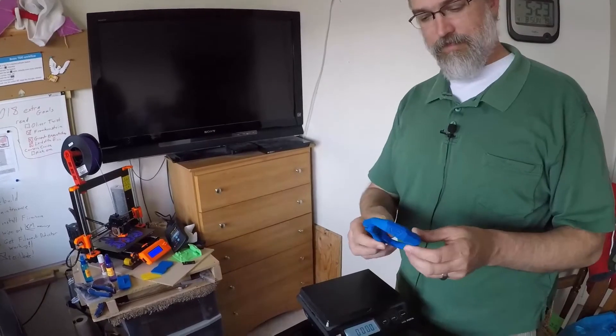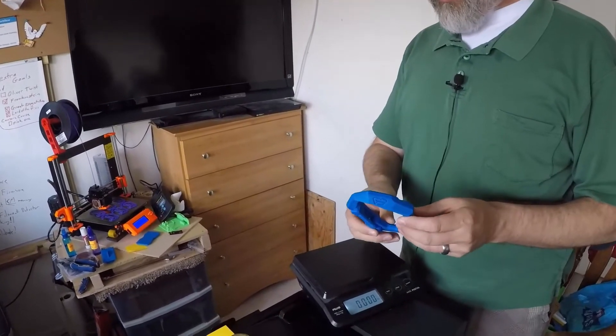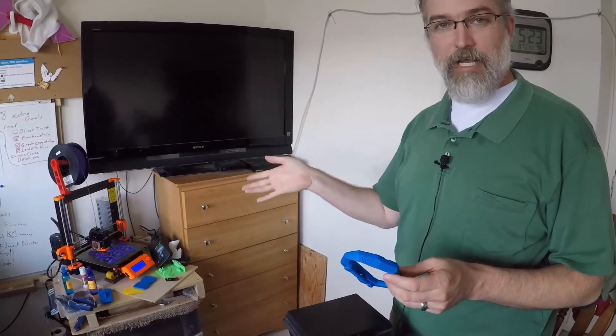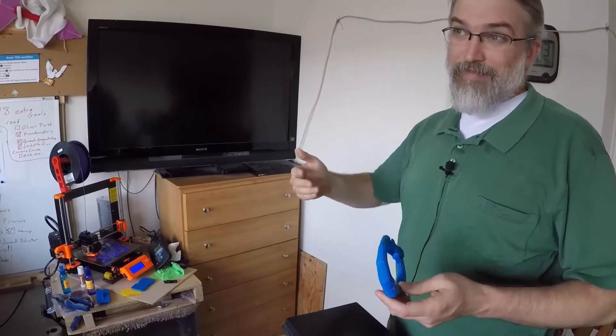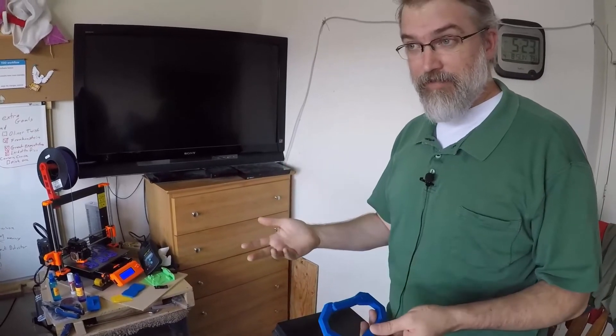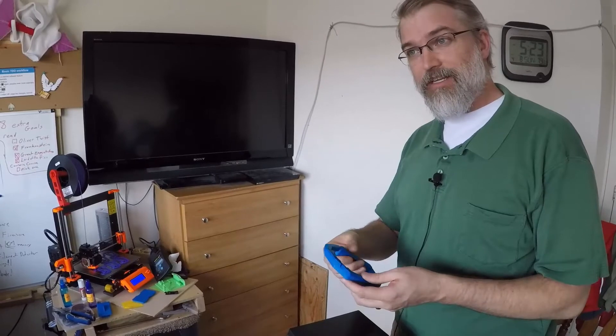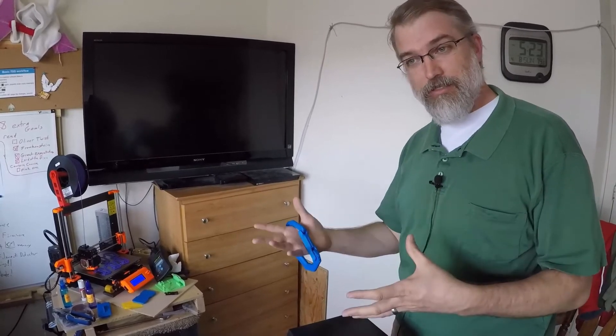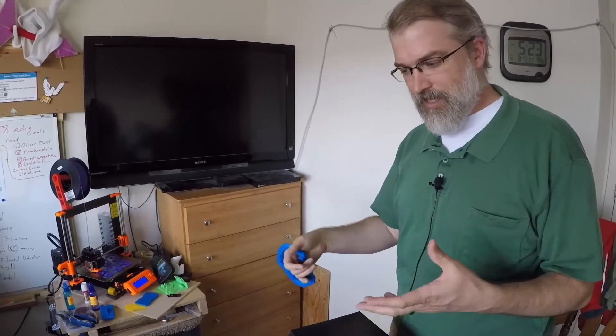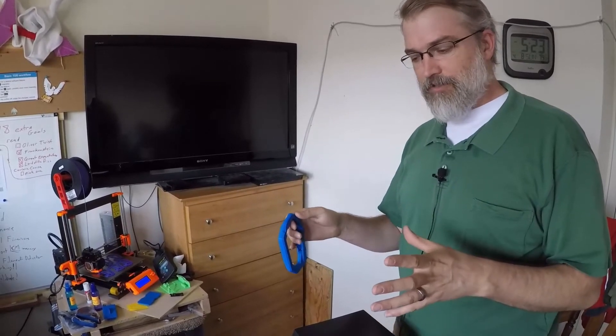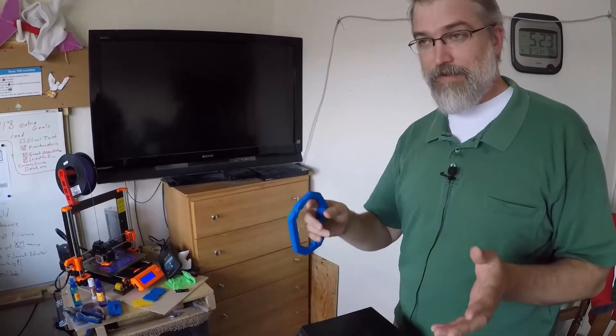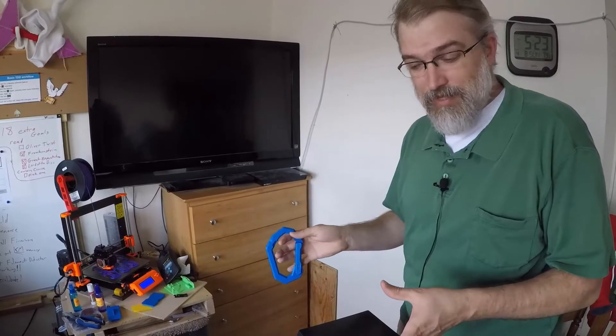So I printed this off recently. And this took, according to the numbers I got from my Prusa i3 Mark III, 12.91 meters. And using my estimate I was using before, which said a meter of filament costs six cents, which is based on the idea of one kilogram of filament was $20, and one kilogram of filament had 333 meters - and if you use that, it comes out to 77 cents. So 77.4 cents is what that estimate would be.